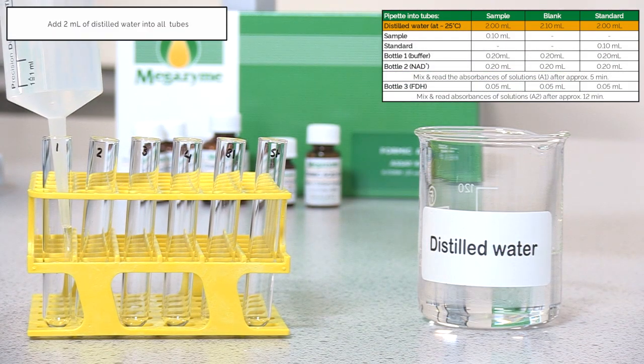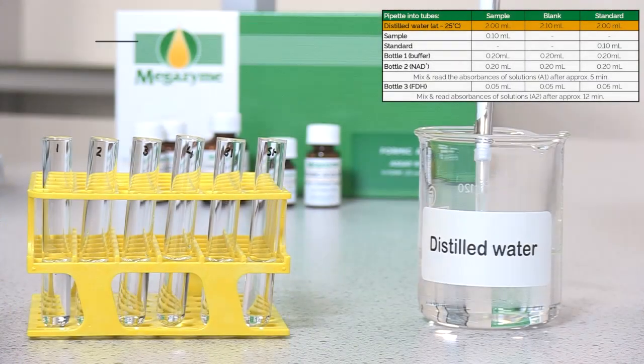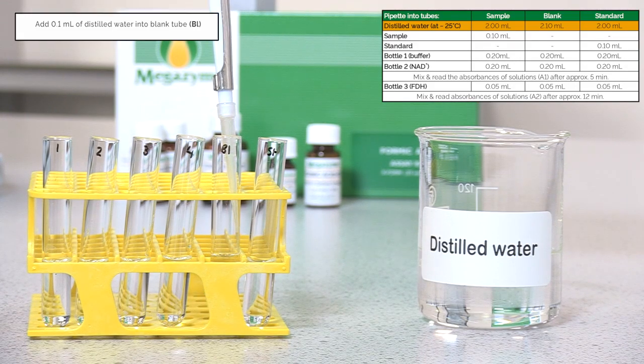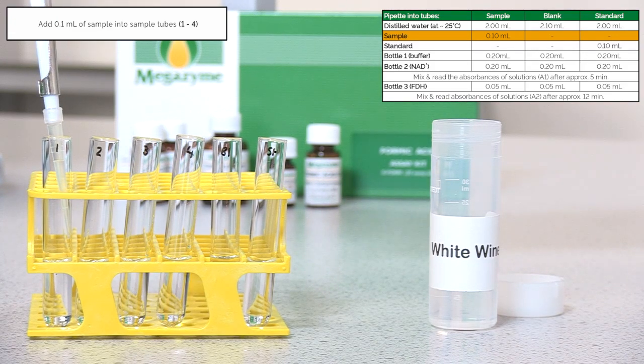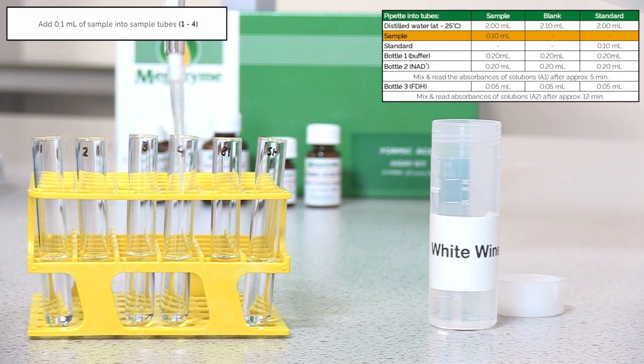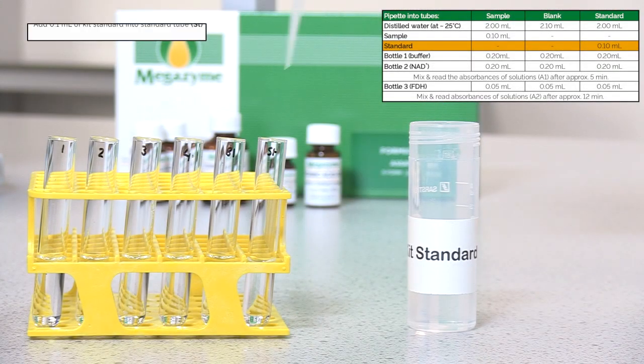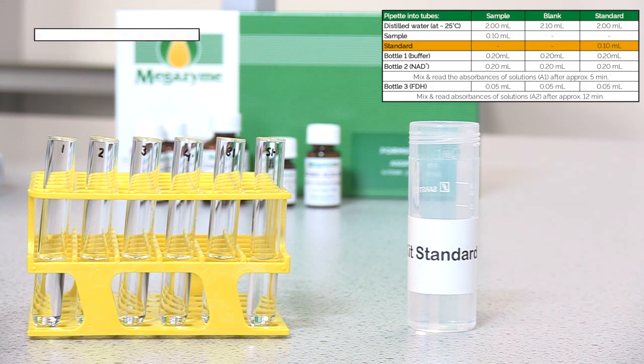Pipette 2 ml of distilled water into all assay tubes. Pipette 0.1 ml of distilled water into blank assay tube. Pipette 0.1 ml of sample to sample assay tubes. Pipette 0.1 ml of prepared standard into standard assay tube.